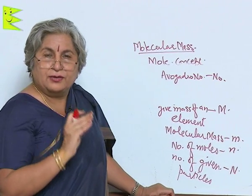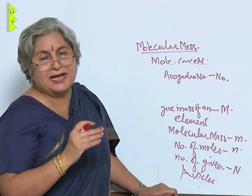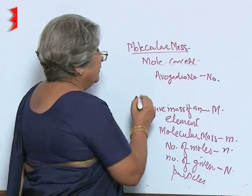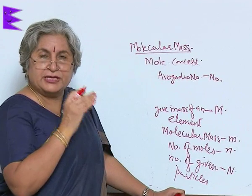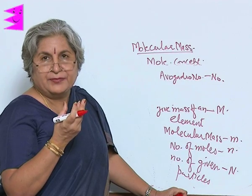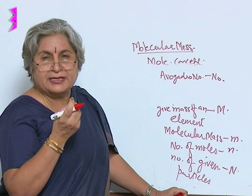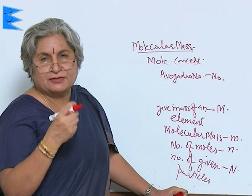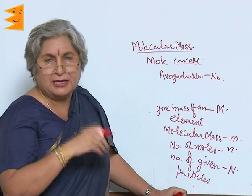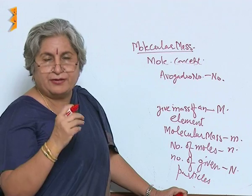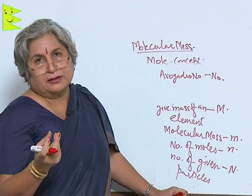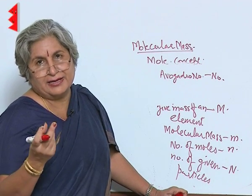We can know both number as well as weight by mass using this method. What we do is only change the unit, otherwise it remains the same. For example, in the case of oxygen, the molecular mass is 16 and the mass would be 16 grams. For hydrogen, the mass is 1 and the mass is 1 gram.